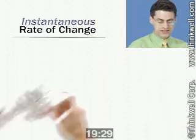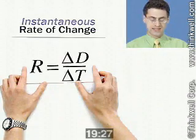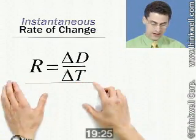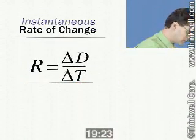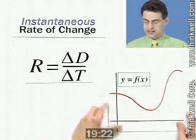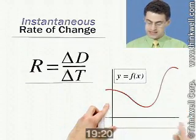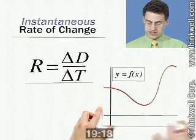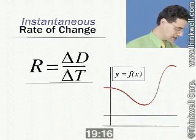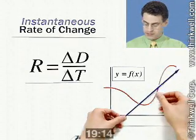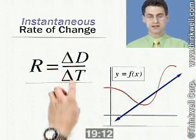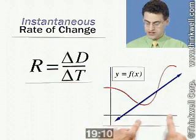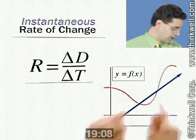Question one: instantaneous rate of change. Well, rate is just change in distance over change in time — distance equals rate times time. If you graph a function that represents distance against time, and you look at the change in time and the change in distance, you actually get a slope of a line — rise over run, change in distance over change in time. So you get a slope.